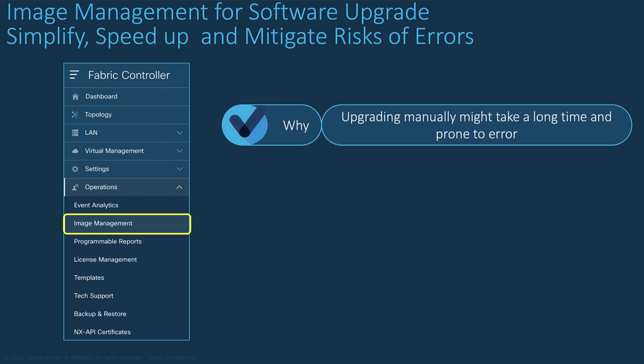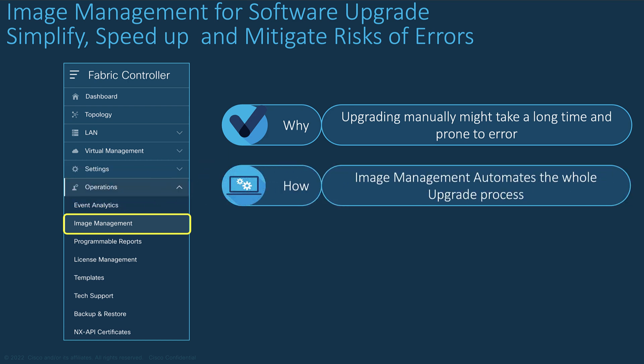Why is the image management process so crucial? Think of if you have many switches to manually upgrade one by one — it will take a long time during which you need to be dedicated to the upgrade, with all the risk of human errors and fatigue that may be involved. The image management automates the whole upgrade process with upgrade planning, downloading and monitoring.